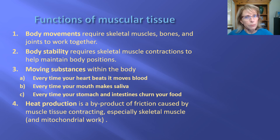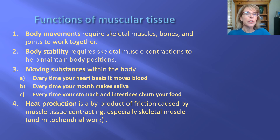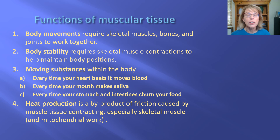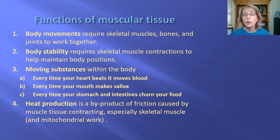Muscle is also important for heat production, and that's easy to forget. The more skeletal muscle an individual has, the easier it is for them to stay warm when their environment is cooler than they are. The reason that in any individual household or office where people work together there will be disagreements about the proper temperature to set the thermostat is largely because of the amount of muscle mass and body fat that people have. If someone's got a lot of muscle mass it's generating a lot of heat, and if that person also has quite a bit of fat that is insulating that muscle mass, those two things are going to make those people feel warm at a much colder temperature than perhaps a slender older woman who has very little muscle mass.